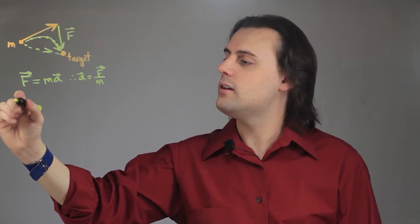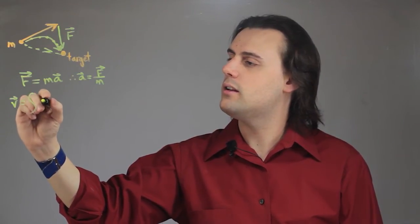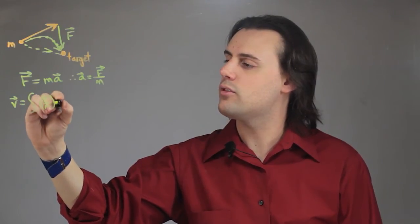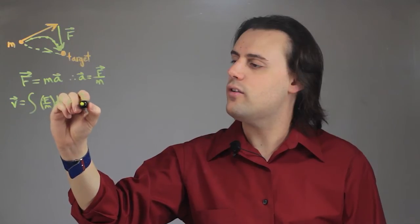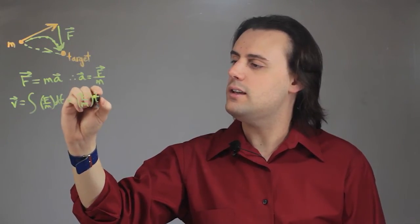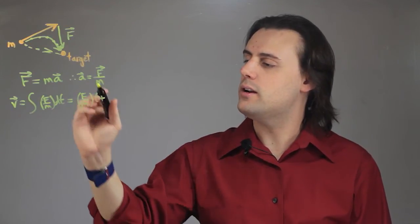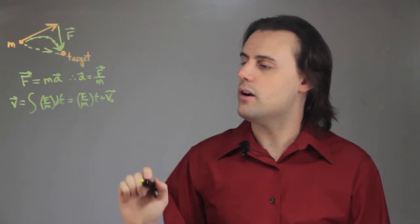Let's integrate to find the velocity. We integrate the acceleration, which is F over m, with respect to time and we get F over m times t plus the integration constant, which is interpreted as the initial velocity of the object.